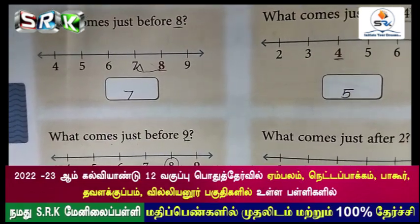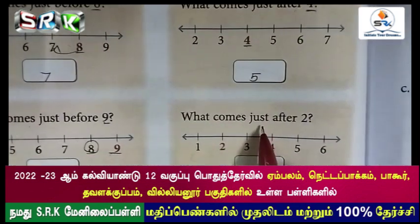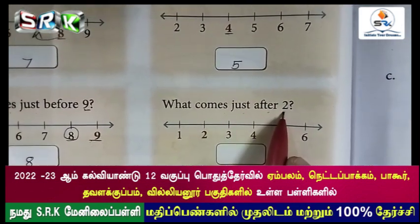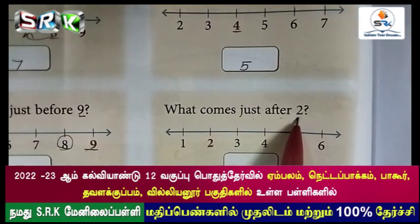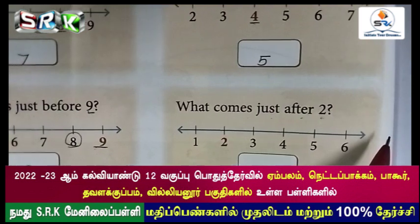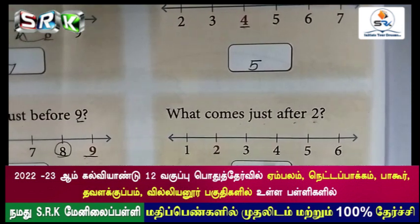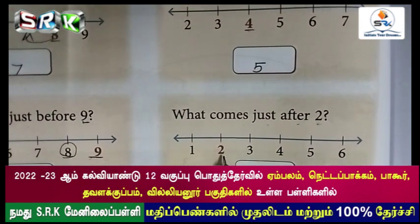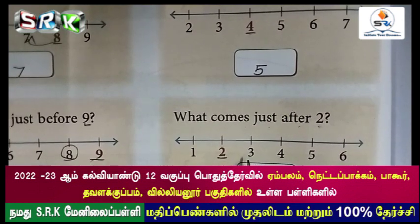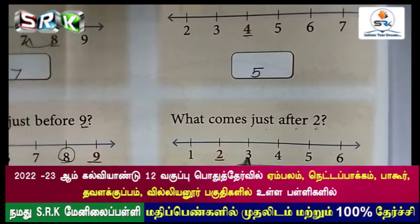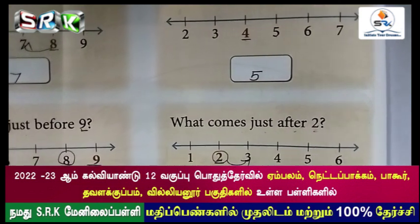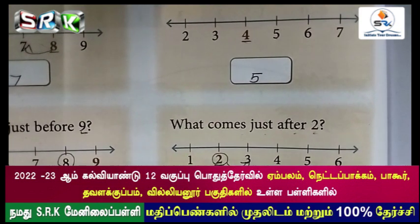Next one: what comes just after 2? You have to count the next number after 2. Two, then three. So after 2 comes 3 — 'pinnadi' number is three. All of you write 3 in the box.